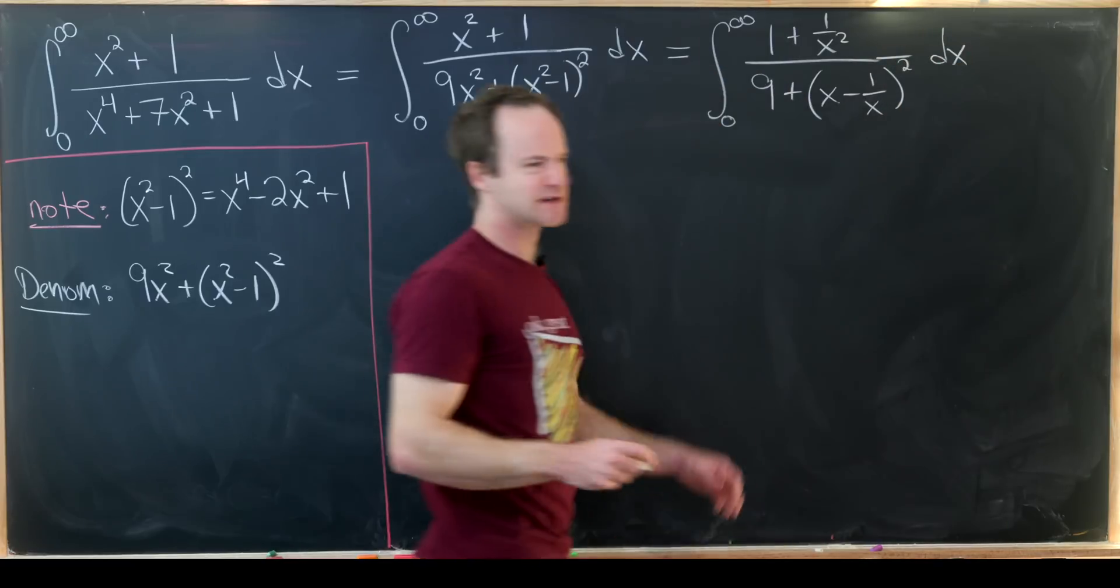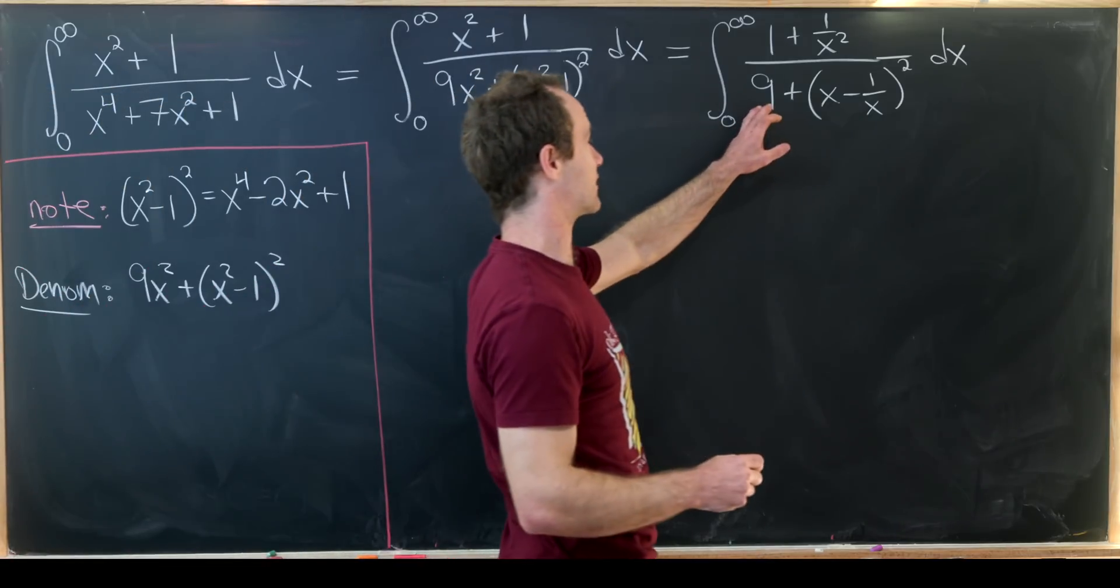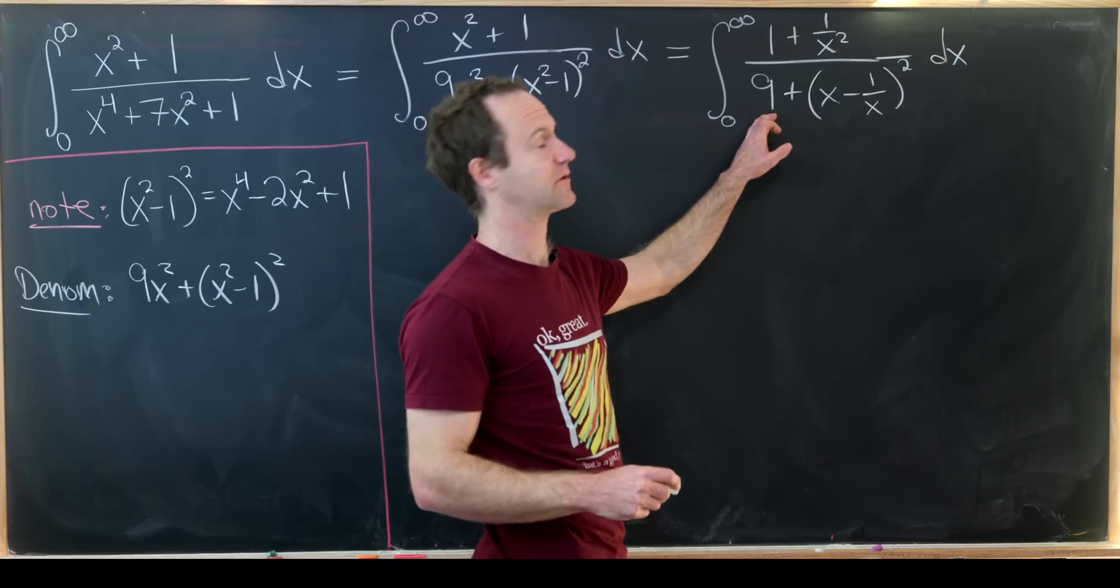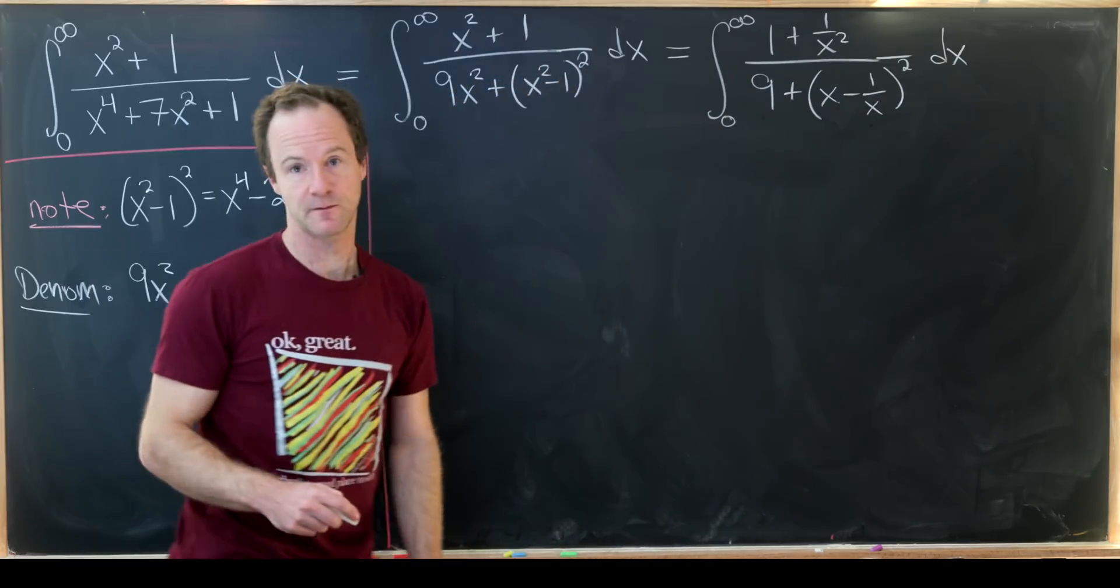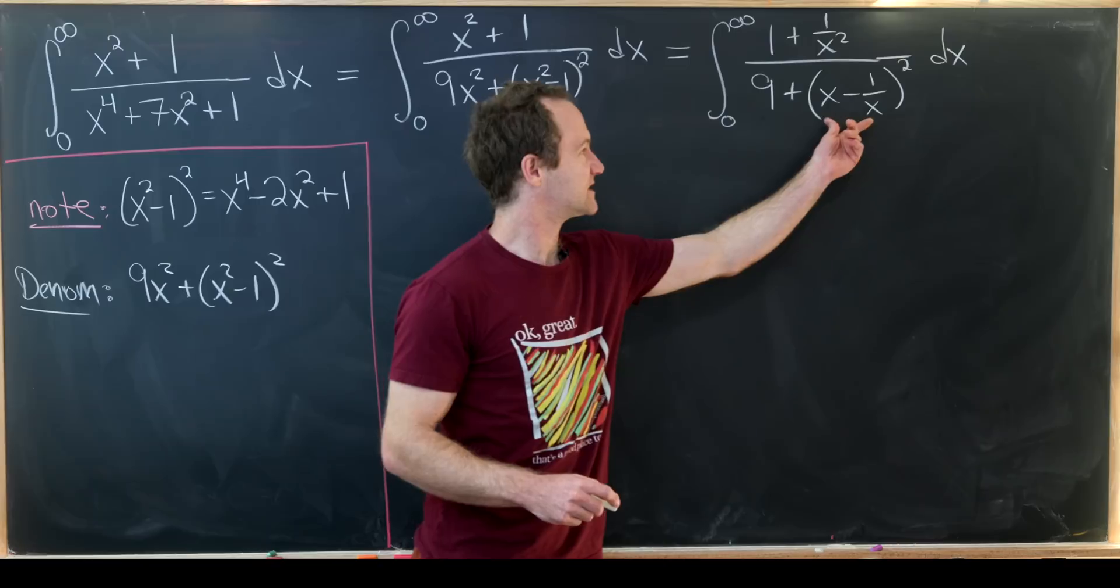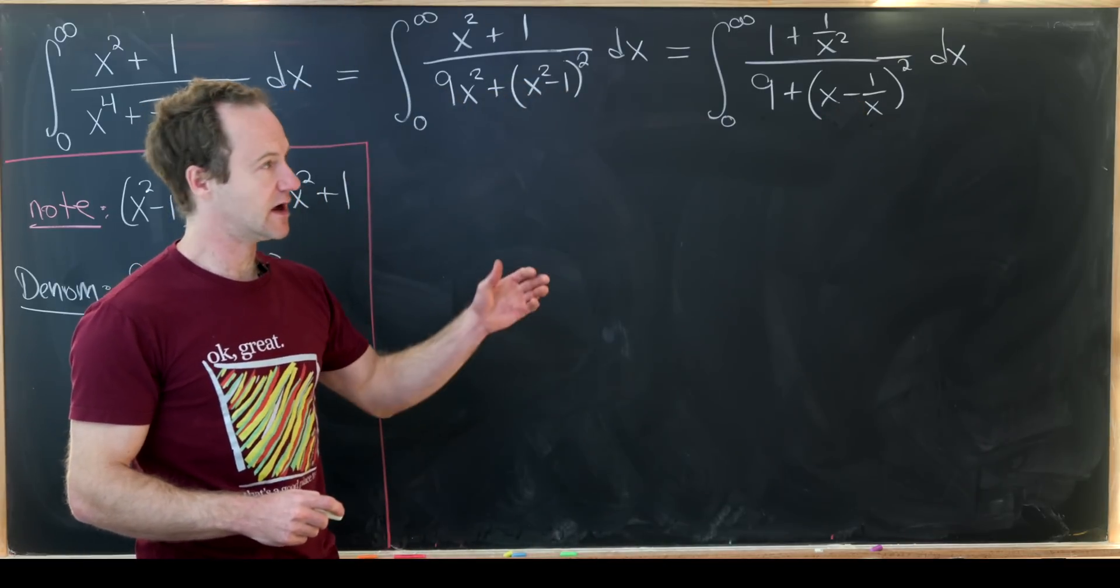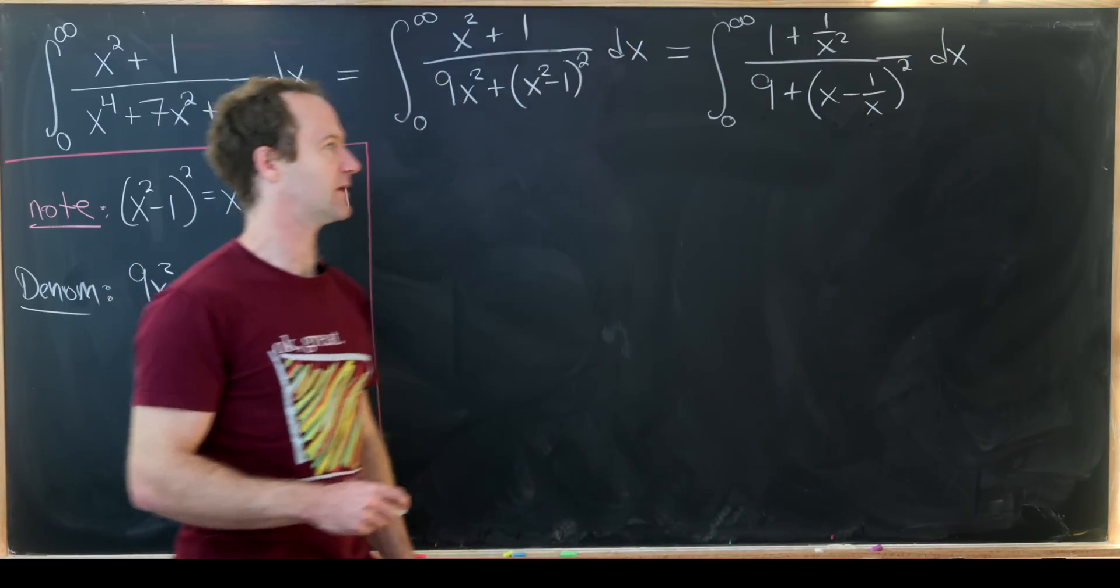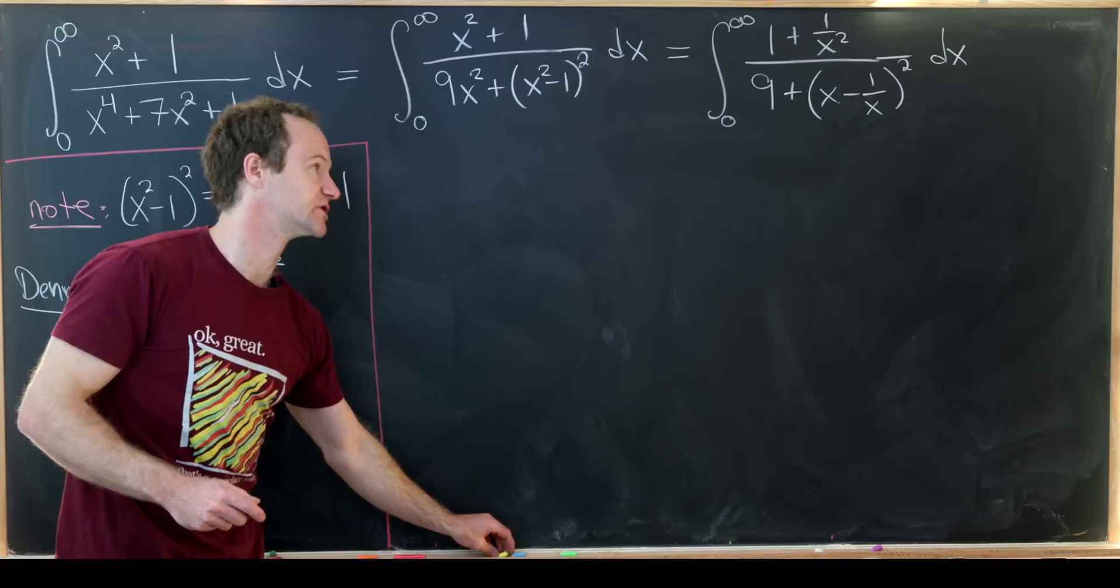Now it's kind of shaping up why this will work. Notice in the denominator I have 9, which is a nice perfect square, plus something squared. In fact this something inside of our square in the denominator has a derivative which is showing up in the numerator. That's really what makes this whole thing work so nicely.